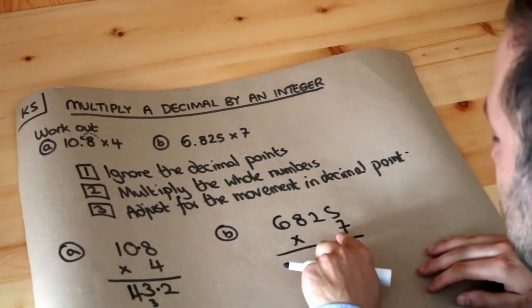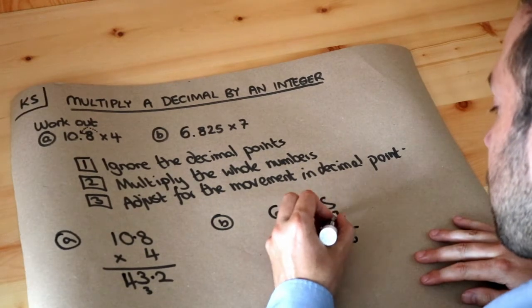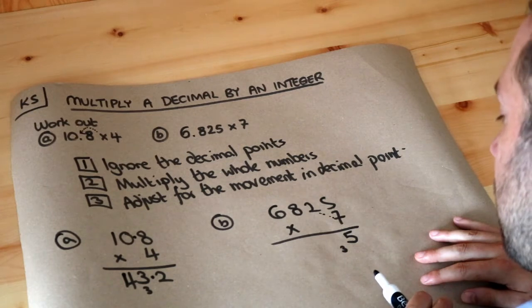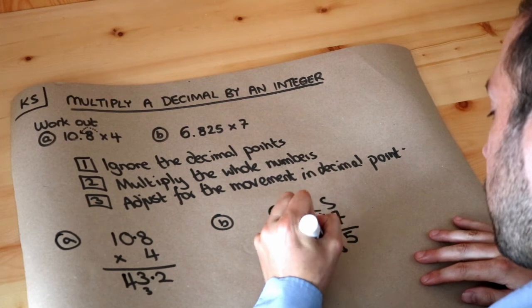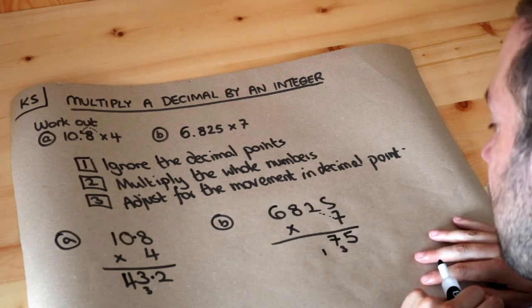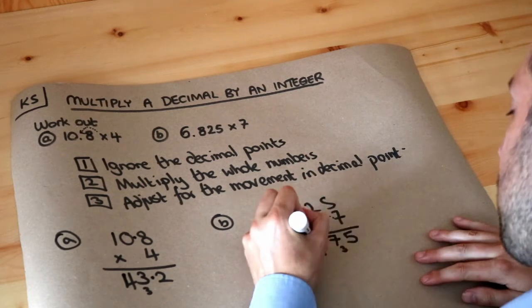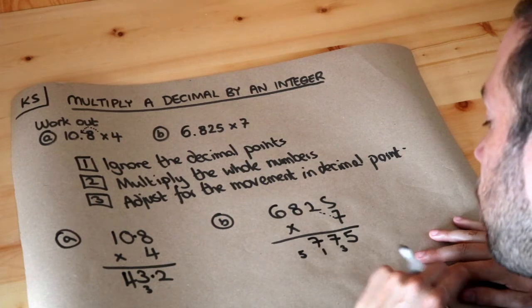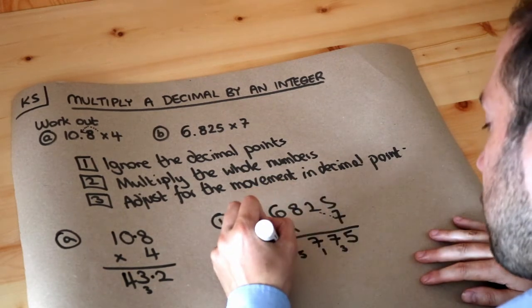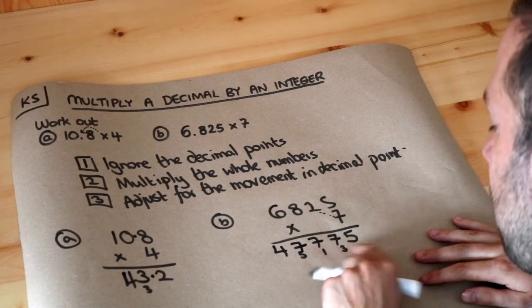5 times 7 is 35, so put the 5, carry the 3. Then 2 times 7 is 14, plus the 3 is 17. Put the 7, carry the 1. 8 times 7 is 56, plus the carried 1 is 57. Put the 7 and carry the 5. Then 6 times 7 is 42, plus the 5 is 47. So we get 47,775.